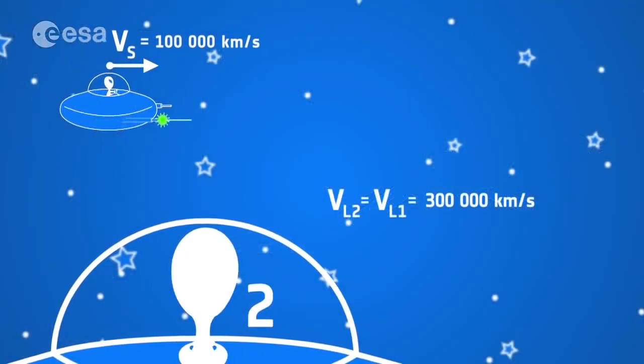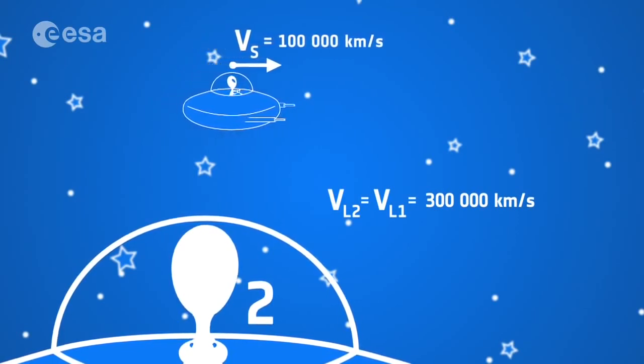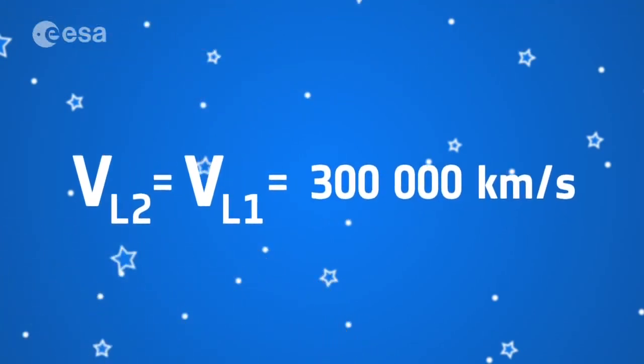In fact, both observers measure the speed of light as being 300,000 km per second, regardless of their relative velocity. The speed of light in the universe is the same for all observers. Einstein realised that the only way to mathematically model this was to start with the observed constant speed of light and to change the way in which different inertial observers measure space and time.